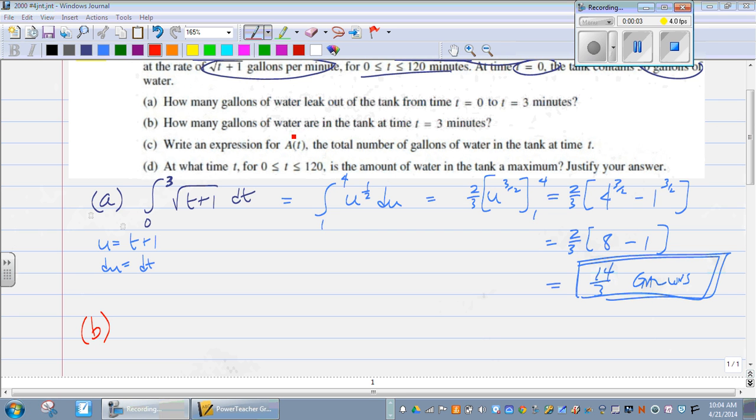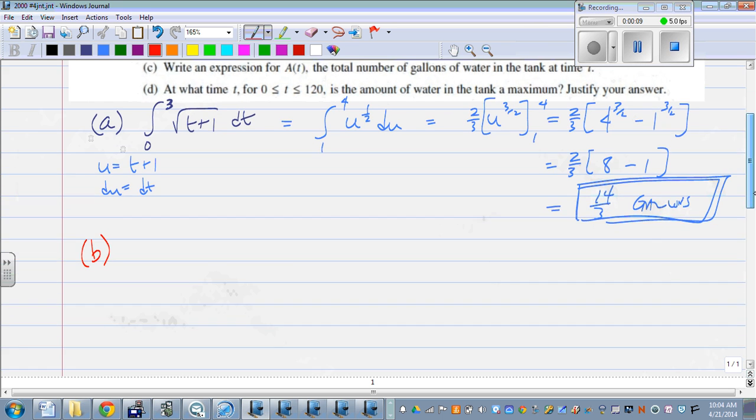Let's take a look at part B. How many gallons of water are in the tank at time T equals 3 minutes? For this, we're going to have to take into account three different things.